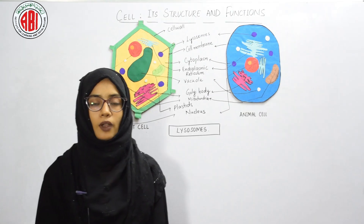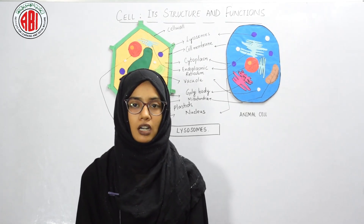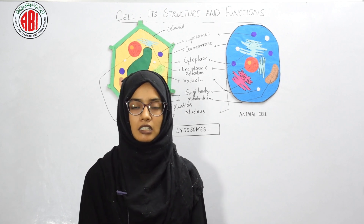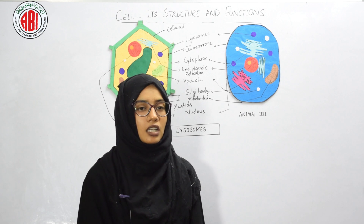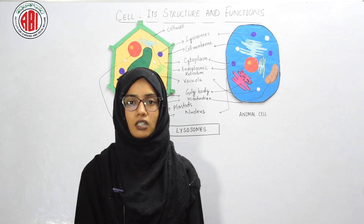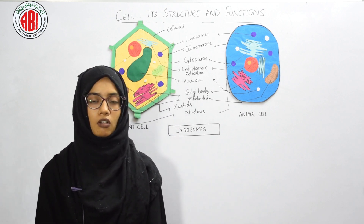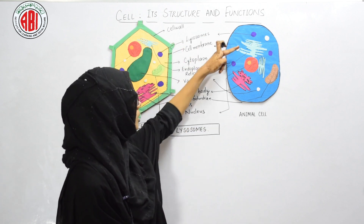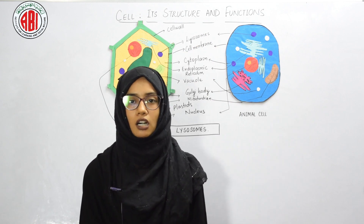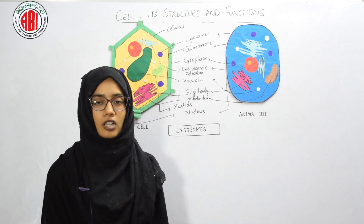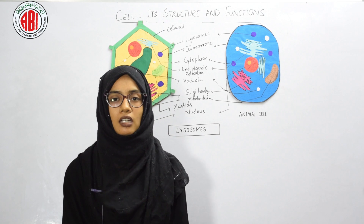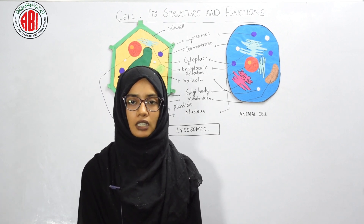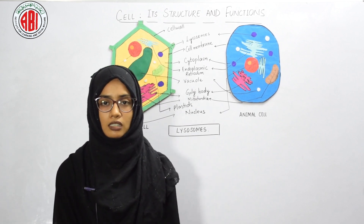Lysosomes are cell organelles — tiny particles present in the cytoplasm — that contain destructive enzymes. These destructive enzymes cannot come in contact with the rest of the cell, because they are carried within the organelle called the lysosome. You can see these tiny particles in the cytoplasm. Materials that need to be destroyed are transported to these lysosomes, where the enzymes damage and digest that material.